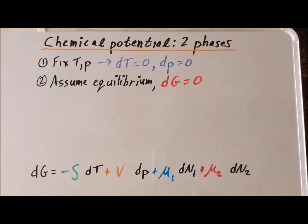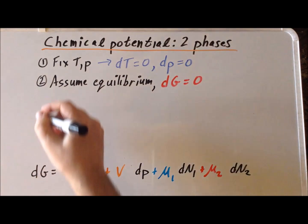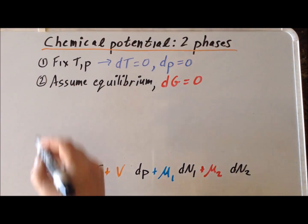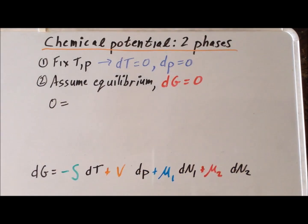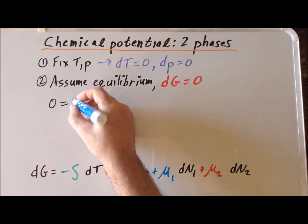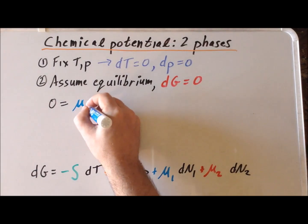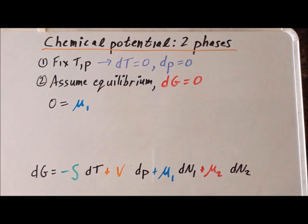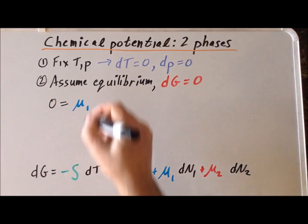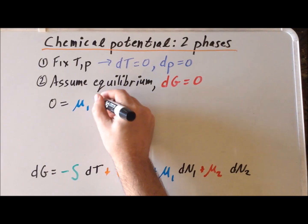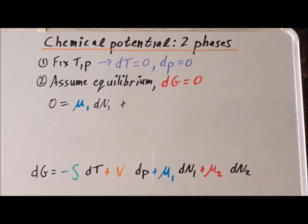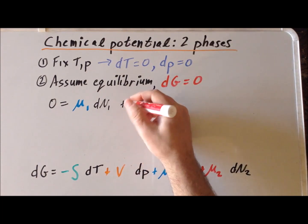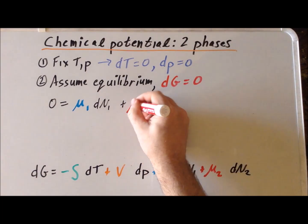With those two assumptions, our expression becomes: zero is equal to the chemical potential of one times dn1 plus the chemical potential of two times dn2.